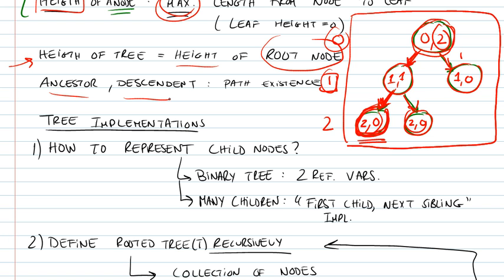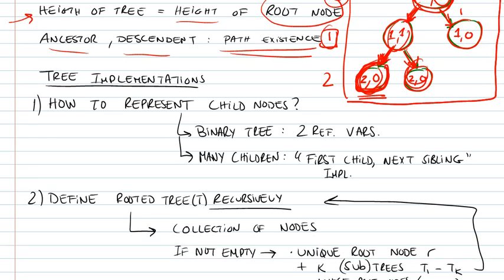An ancestor and a descendant is basically the existence of a path between two nodes. So, this node would be the ancestor of that node, and that node, and that node. Because there are actually paths that allow us to go from one node to the other. And descendant could be similarly defined.